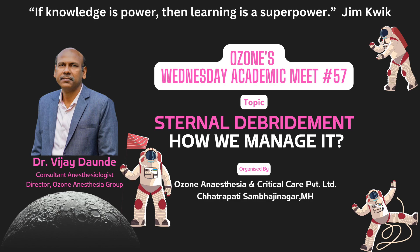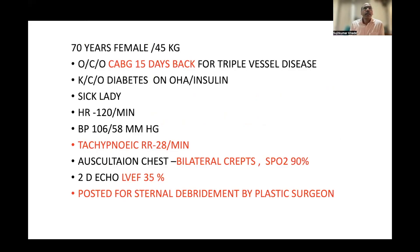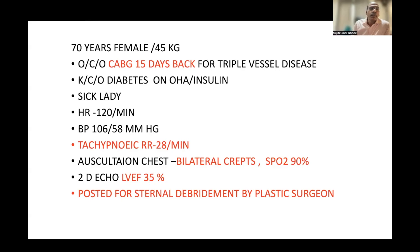A 70-year-old female patient, operated case of CABG 15 days back for triple vessel disease. She was a known case of diabetes on OHA and insulin. She was a sick lady with heart rate 120 per minute, blood pressure 106/58 mmHg, tachypneic with respiratory rate around 28 per minute. On auscultation there were bilateral crepitations, SpO2 was 90%, with EF 35% only. She was now posted for sternal debridement by a plastic surgeon.